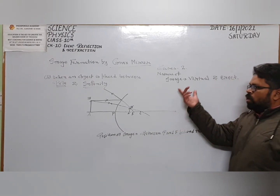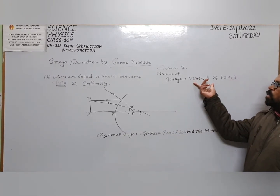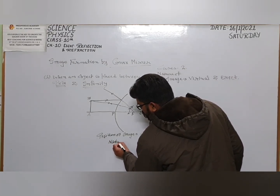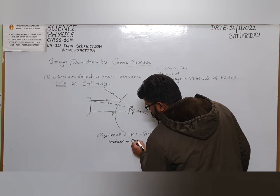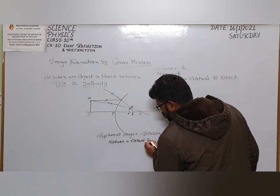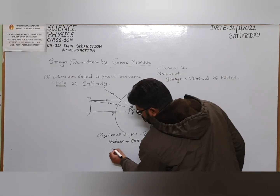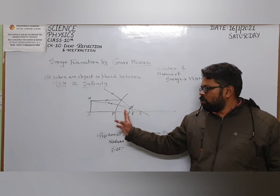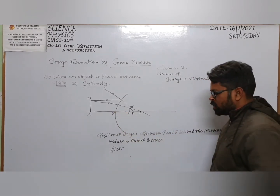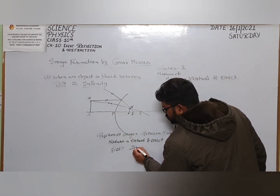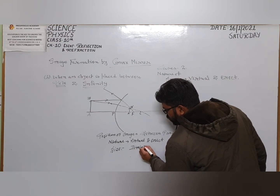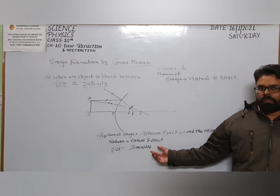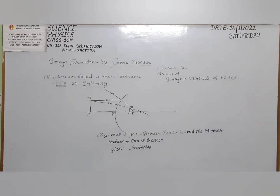The position of the image is between P and F, behind the mirror. The nature of the image is virtual and erect.